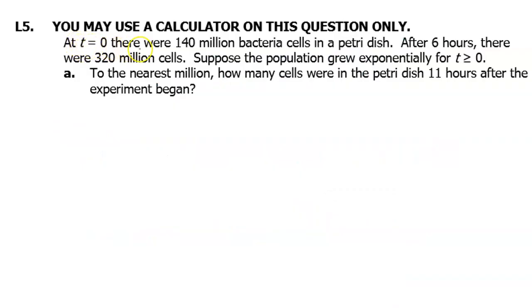At time t equals zero, there were 140 million bacteria cells in a petri dish. After six hours, there were 320 million cells. Suppose the population grew exponentially for time t is greater than or equal to zero. To the nearest million, how many cells were in the petri dish 11 hours after the experiment began?